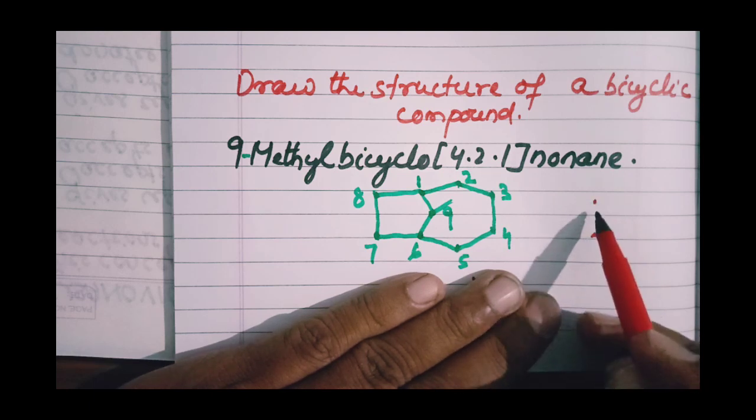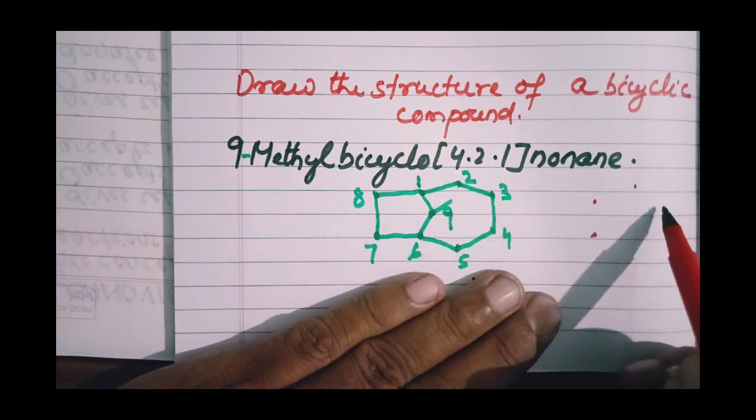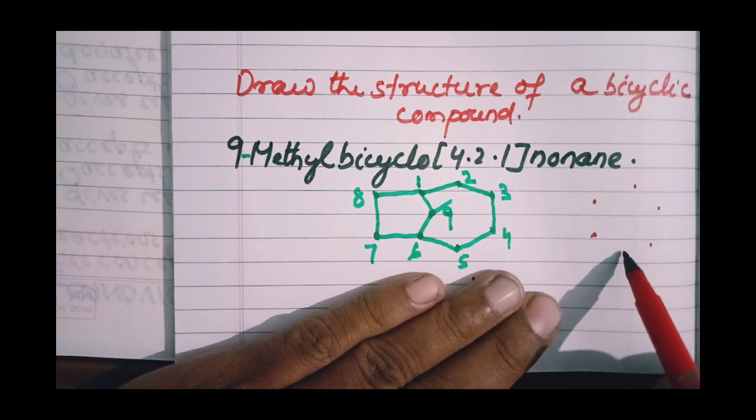On one side of these bridgehead carbons, there is a carbon bridge having four carbon atoms. Those four carbon atoms are shown by four dots.